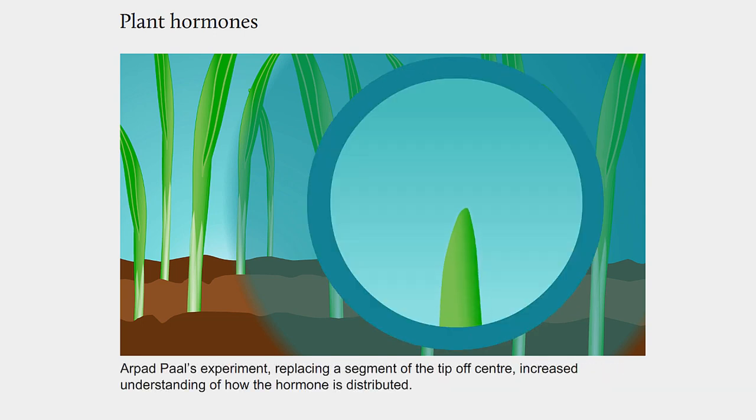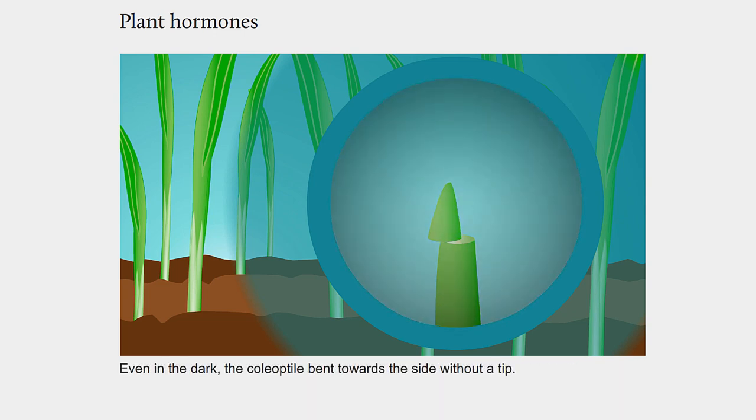Arpad Parl's experiment, replacing a segment of the tip off-centre, increased understanding of how the hormone is distributed. Even in the dark, the coleoptile bent towards the side without the tip.